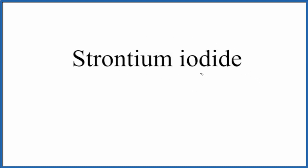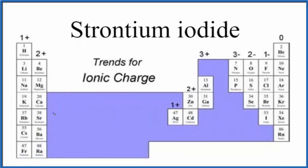We need to think about the charge on each element. If we look at the periodic table here, we can see strontium right here in group two, so that has a two plus ionic charge. And then iodide, that's iodine right here, that'll have a one minus.